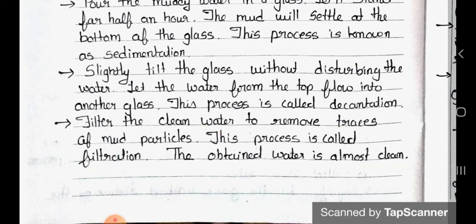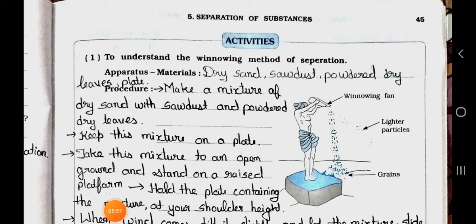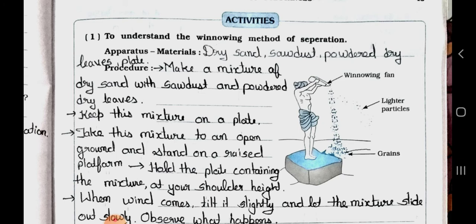Now see the next page. Now see the activities. Number 1: To understand the winnowing method of separation. Here apparatus and materials are dry sand, sawdust powder, dry leaves, plate etc.